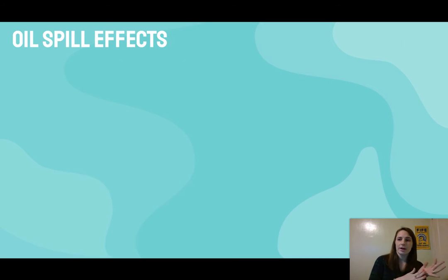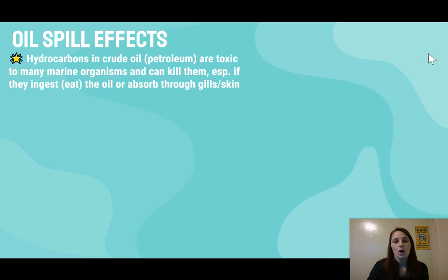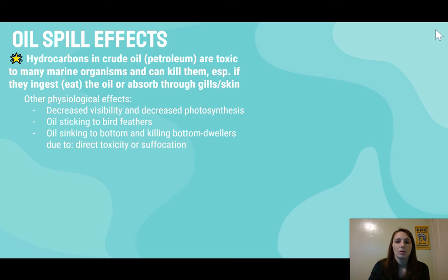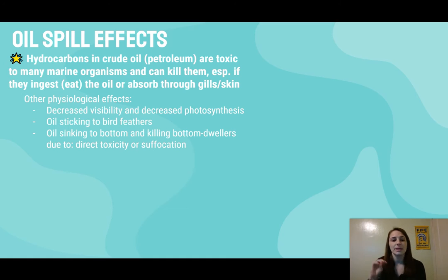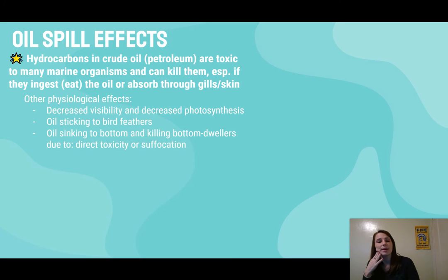Another way we can damage aquatic ecosystems is through oil spills. Hydrocarbons in crude oil and petroleum are toxic to many marine organisms and can kill them, especially if they ingest it or absorb it through their gills or skin. Beyond direct toxicity, there are other stressors: decreased visibility and decreased photosynthesis in oil-covered water. Oil sticks to bird feathers causing hypothermia, ingestion, and inability to waterproof themselves. Oil also sinks to the bottom and kills bottom dwellers due to direct toxicity or suffocation.